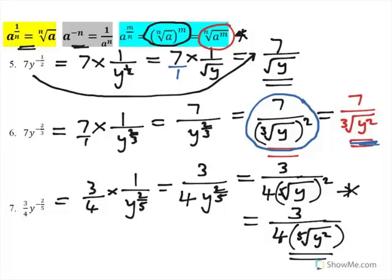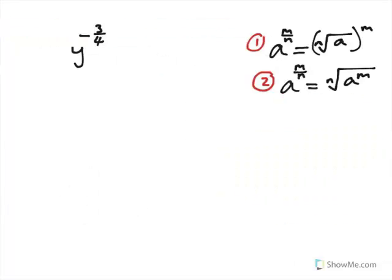Of course, this one here is preferred if we wanted to substitute a value in for y. So, for example, y to the negative 3 over 4.